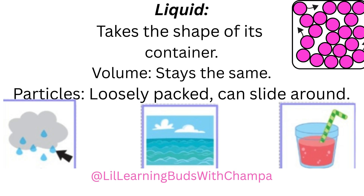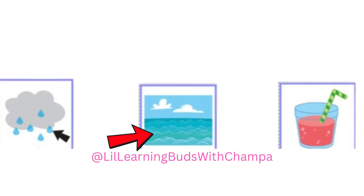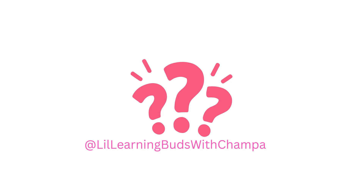What is a liquid? Liquids do not have their own shape — they take the shape of the container they are in. The volume of a liquid does not change, even if you pour it into different containers. Look at the pink bubbly picture on the top right — those are the particles, that's how it looks from inside. They are much more spread out compared to solids, so they can move around easily. Examples are juice, water, and paint.